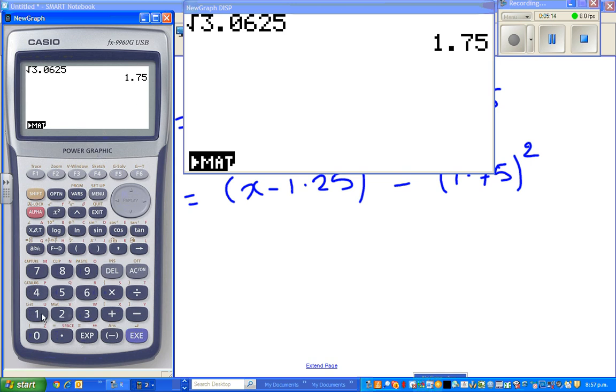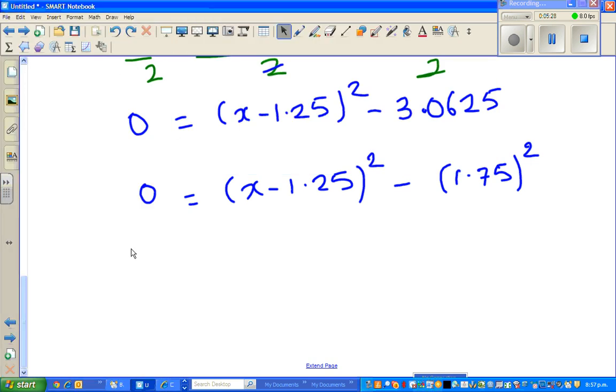Or 1.75 squared, that's the same thing, 1.75 squared equal 3.0625. So that's why I wrote 3.0625 as 1.75 squared. So this has become now.